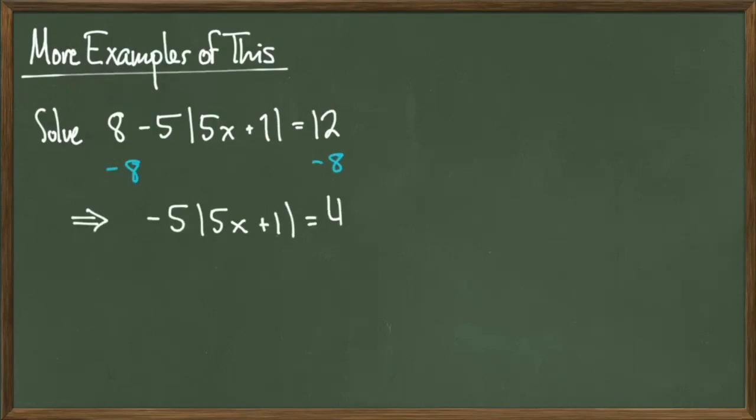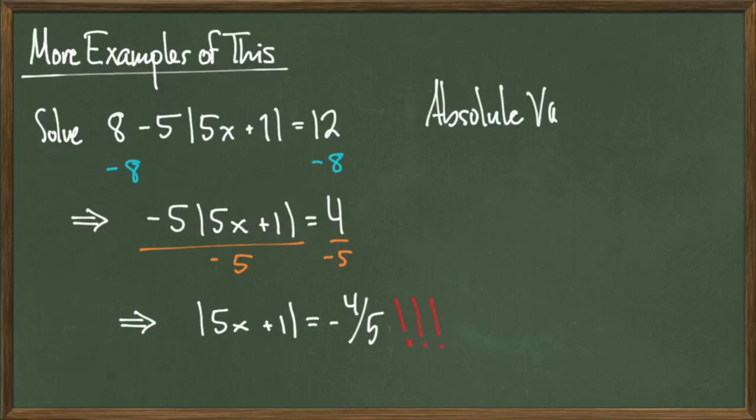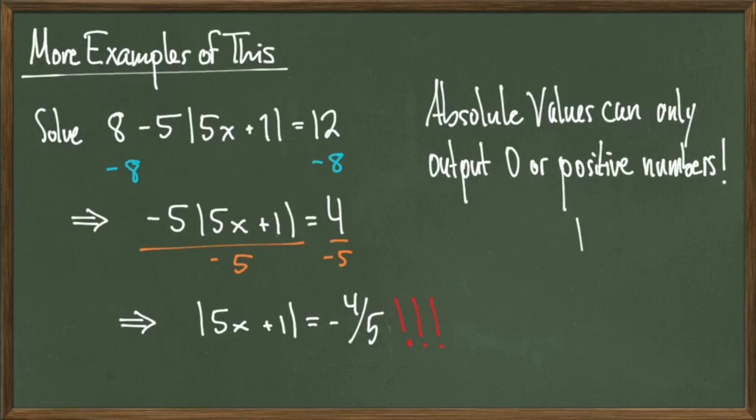As I run through the steps of trying to solve this equation, I run into the statement absolute value of 5x plus 1 is equal to negative 4 fifths, which is a false statement. We know that when we have absolute value bars, they cannot output negative numbers. They can only output 0 or positive numbers, therefore we have an empty solution set.